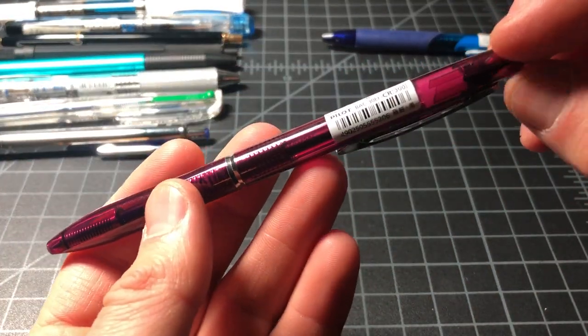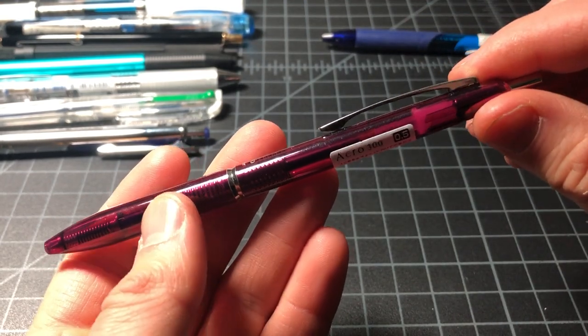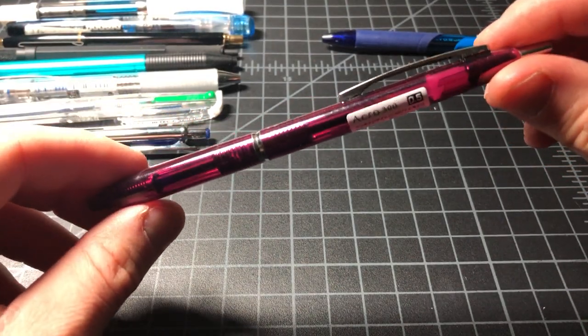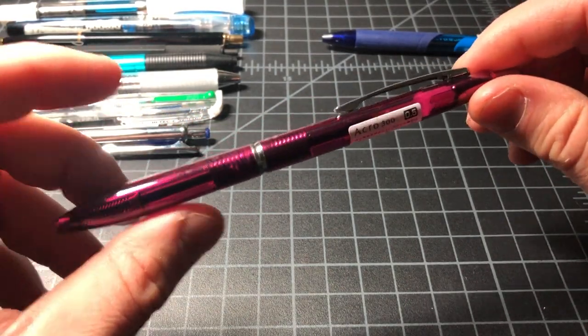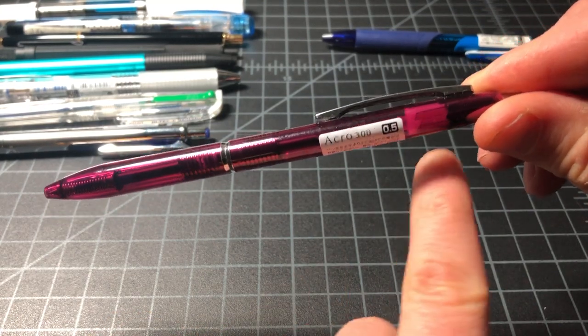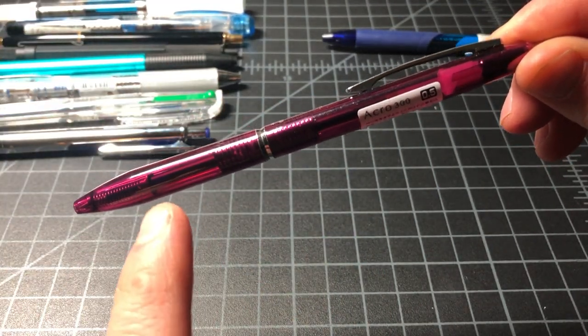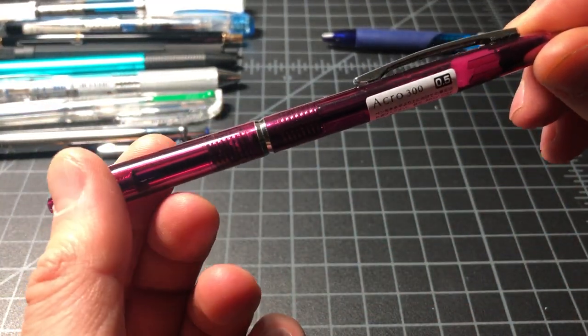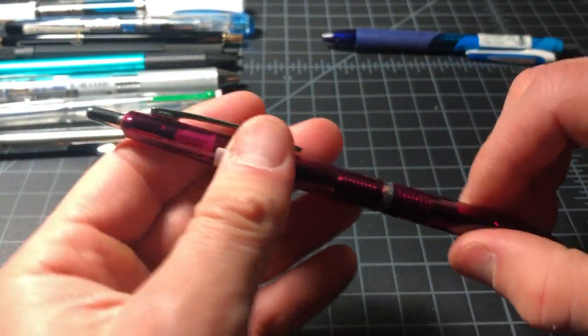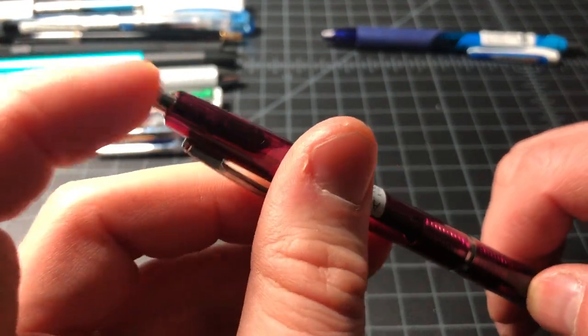And then this, this is the Pilot Acro 300. One of my favorite pens of the year, if not my favorite. Just a great pen for three dollars, it's just phenomenal. It has some really nice design cues, very subtle. Like you can see how thin the pen is and it gets wider at the grip area. Even though the grip's all the same material, it gets a little bit wider which makes it that much more comfortable for extended writing.